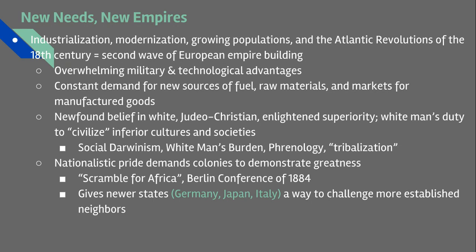Beyond weaponry, you have technological advances in transportation and medicine that enable Europeans to penetrate Africa and Asia like never before. There was mass production of antibiotics and vaccines like quinine, which protect Europeans from tropical diseases that had stymied their efforts to advance into Africa and Southeast Asia for centuries. You also have the development of the steam engine, railroads, and steamships, which allow for longer, faster, and easier transportation. In the very late 1800s, the invention of the internal combustion engine allows for smaller vehicles like cars and trucks.